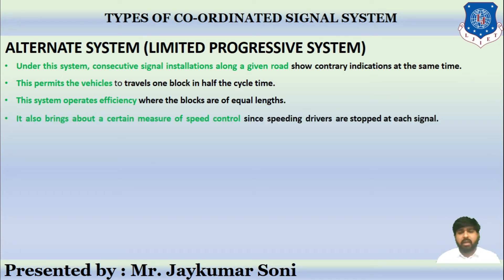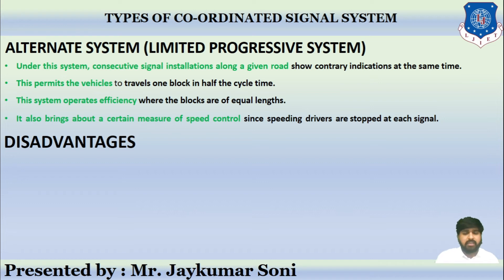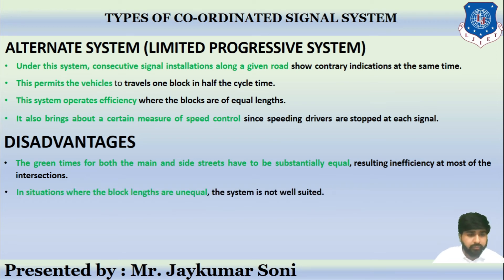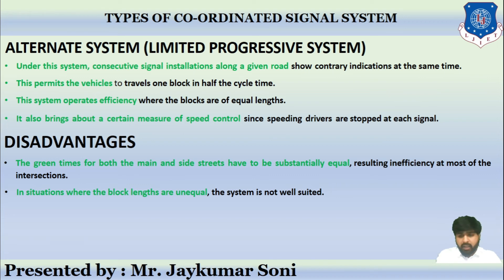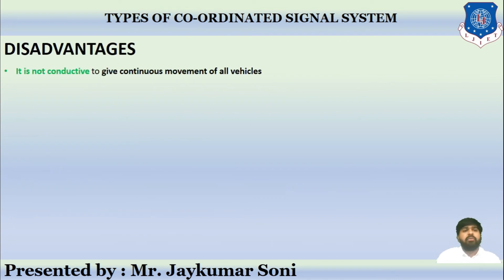The alternate system also brings about a measure of speed control, because speeding drivers are stopped at each signal. However, its disadvantages include that the green time for both main and side streets must be substantially equal, resulting in inefficiency at most intersections. It is not well suited where block lengths are unequal, and adjustments are quite difficult when traffic conditions are changing.